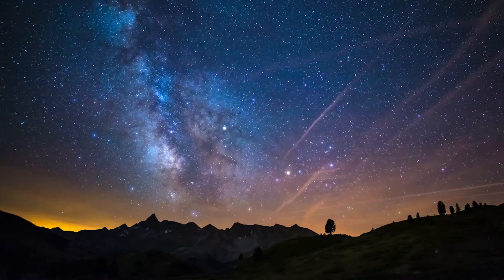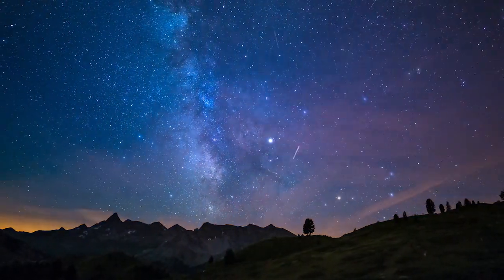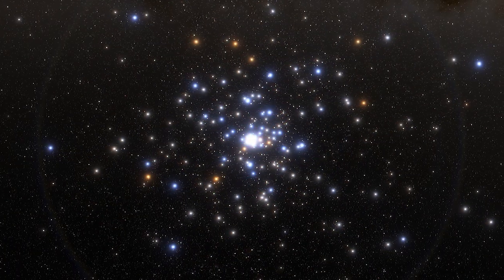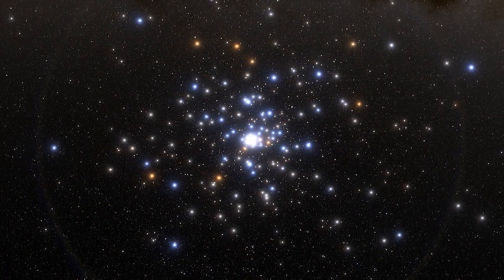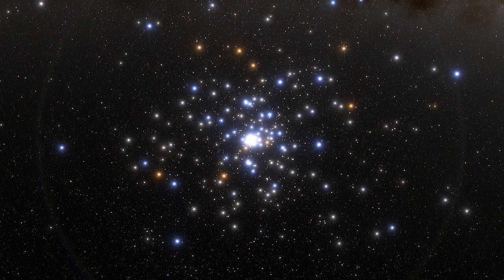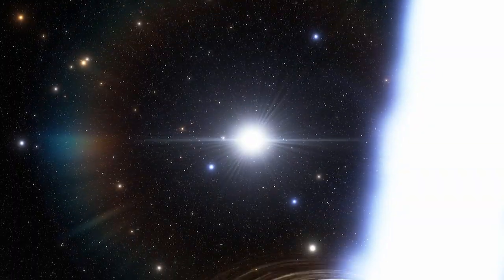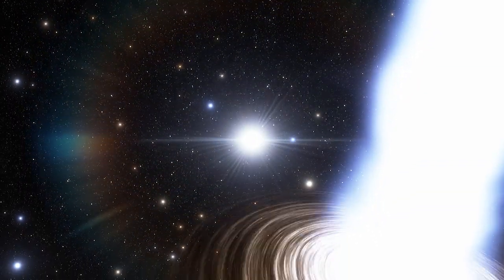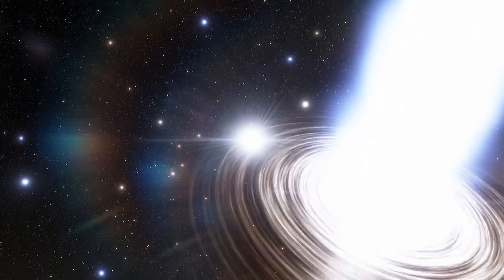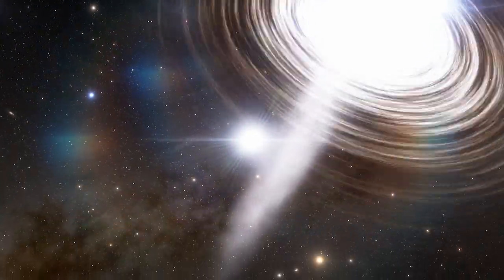And because the center of the Milky Way is a crowded region, it's very hard to find stars there. Most of these stars have large enough orbits that scientists describe their motion by Newtonian gravity and Kepler's laws of motion. But a few orbit so closely that their orbits can only be accurately described by Einstein's theory of general relativity.